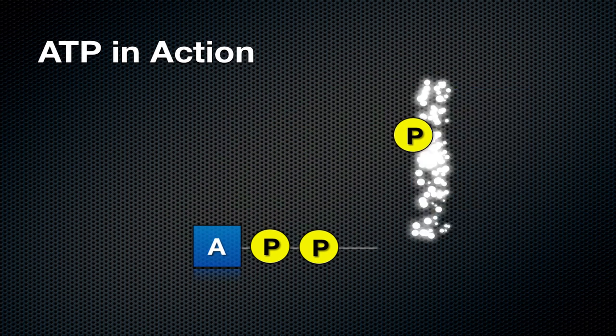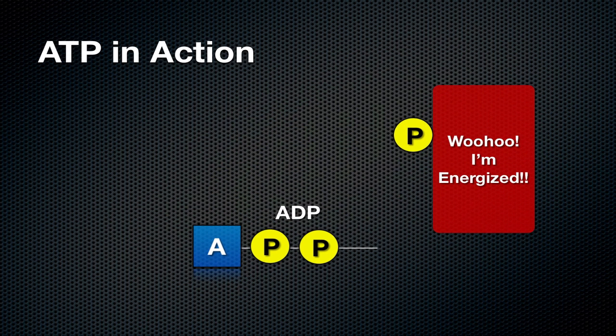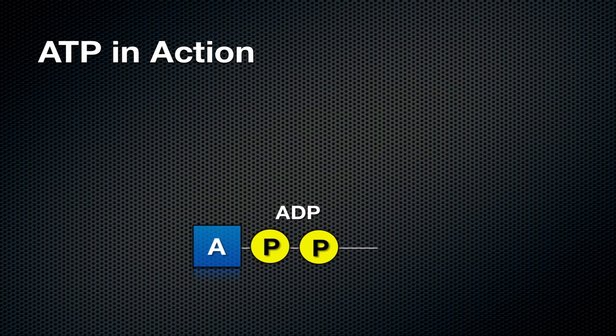When this happens, the process gets the energy that it needs, and it can then do whatever task it needs to accomplish. Let's get rid of this process for now, and now you can see we are left with two phosphate groups, so it's no longer ATP, it's ADP, or adenosine diphosphate.